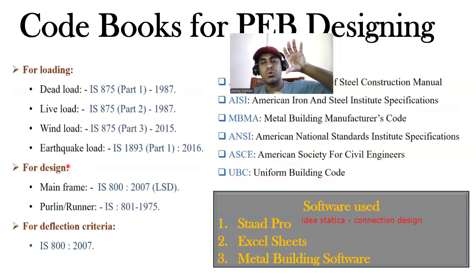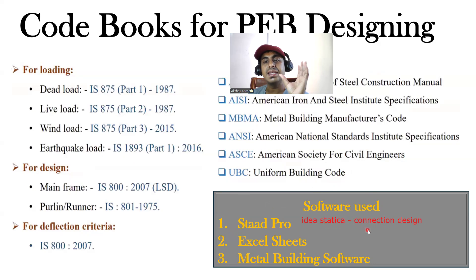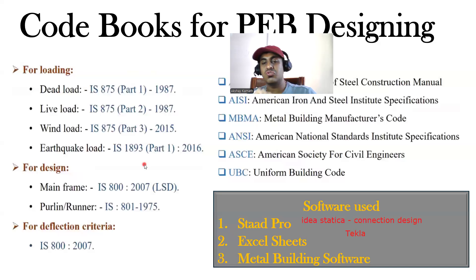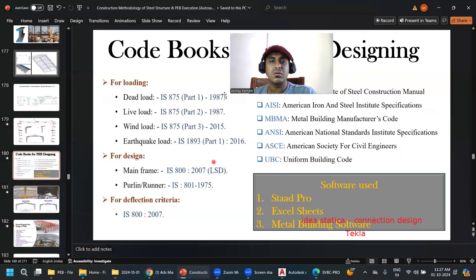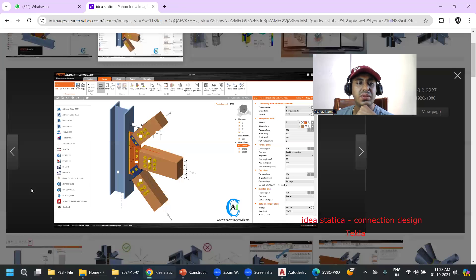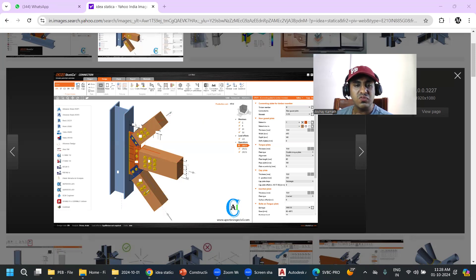Connection design involves deciding bolt placement — for example, six bolts on top and six bolts at the bottom. Using IDEA Statica, you can determine how many bolts are required. You can see a column with a plate attached and all the connecting elements. The software visually shows the bolts and lets you design each connection.